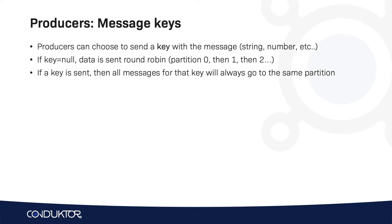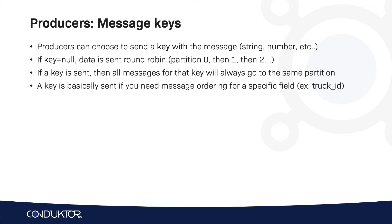In case you are sending a key with your message, all the messages that share the same key will always go to the same partition. This is a very important property of Kafka, because if you need ordering for a specific field — for example, if you have trucks and you want to get all the GPS positions in order for a specific truck — then you need to set your message key as the unique identifier for that truck, i.e., the truck ID.